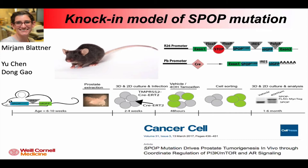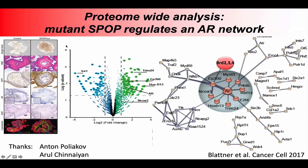We learned several things from this model. Arguably the most important came from a simple proteomics experiment in collaboration with the Ruedi Aebersold proteomics group, where we looked at mouse prostate organoids with Cre-inducible mutant SPOP and asked what proteins are going up and what proteins are going down when we turn on this mutation in the mouse prostate. Looking at the up-regulated proteins and doing a network analysis, we see these proteins are physically and functionally related to the androgen receptor, with the androgen receptor itself as the hub of that network. Many of these proteins are bona fide substrates of SPOP that are deregulated by mutations.